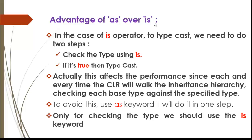Use the 'is' keyword only when you explicitly want to check the type. Otherwise, use the 'as' keyword, which avoids degrading application performance.